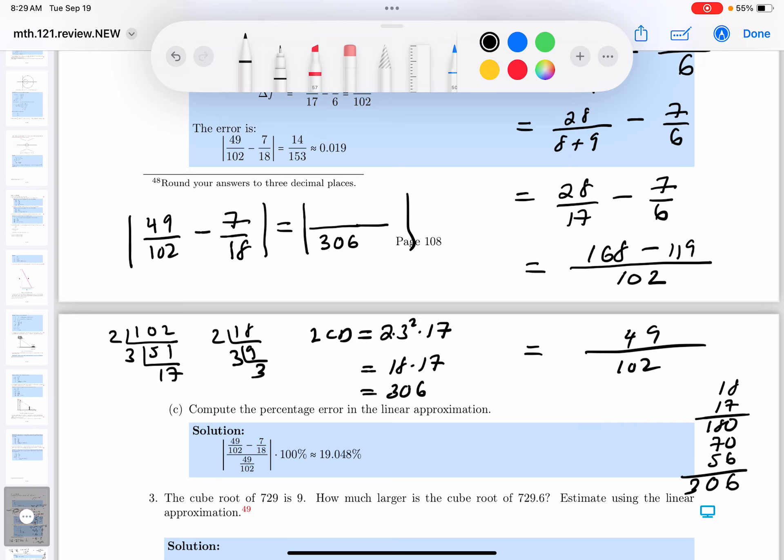I got the LCD. Let's do the 49 over 102. And 102 has got a 2, a 3, and a 17 in it. It's missing a 3. So I'll put 3 over 3. Minus 7 18ths. Now the 18's got a 2 and 2 threes in it. It's missing a 17. I already did this. I know it's 306.